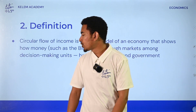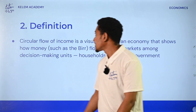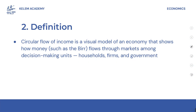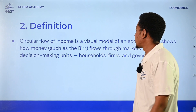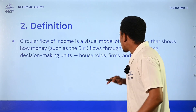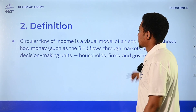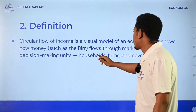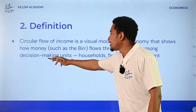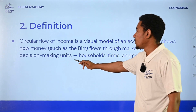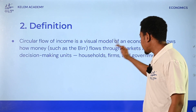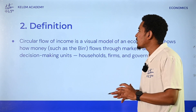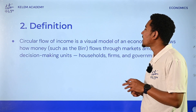Circular flow of income. The visual model shows how money flows through markets among decision-making units: household, firm, and government.